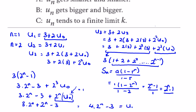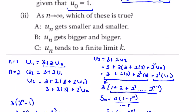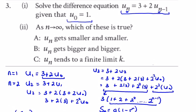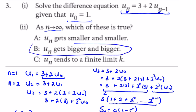This is uₙ in terms of n, and it's obviously going to get bigger as n increases — 4 times 2 to the power of n will increase. So what does the question ask? Which of these is true as n gets bigger, as n tends to infinity? It's going to get bigger and bigger, as we can see in question 3.